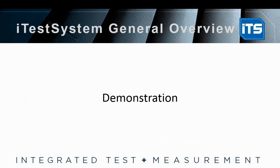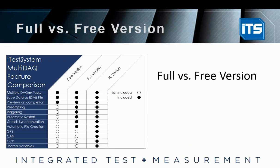Next: full versus free version. The free version — anybody can go onto our website, iTestSystem.com, and download it and immediately start using it to take data. That comes with multiple DAC-MX tasks, it allows you to save all your data as a TDMS file, and like we did, it allows you to preview your data on completion. Perhaps you need to do a more advanced test or would like some more advanced features — that's what we have the full version for. If you're interested in the full version, just contact us. We also do trials of the full version if you'd like to make sure it works for whatever type of test you're doing.